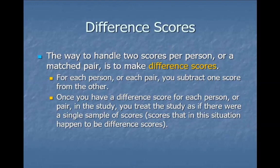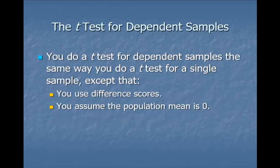That's why the dependent t won't be so different from a one-sample t — we just had to do a little extra legwork to get the sample we were interested in. We do a t-test for dependent samples the same way we would do a one-sample t, except we use the difference scores instead of the raw data, and we assume the population mean is zero. The null hypothesis is no difference, and we always assume the null hypothesis to be true.